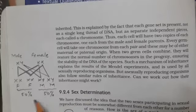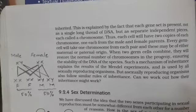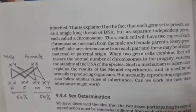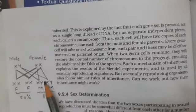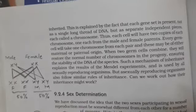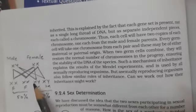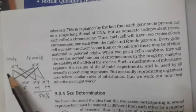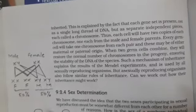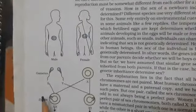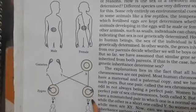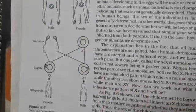What determines whether a child is male or female is more related to the male than the female. In our society, females have been tortured for giving birth to a female child, but actually the male is responsible for whether a child is male or female — not the female — because she has only X chromosomes. The male has both X and Y chromosomes, so the donation of X and X makes a female child, and X and Y makes a male child.